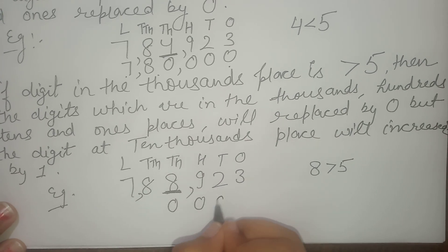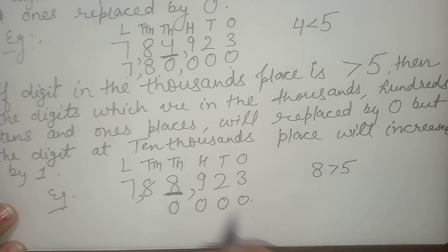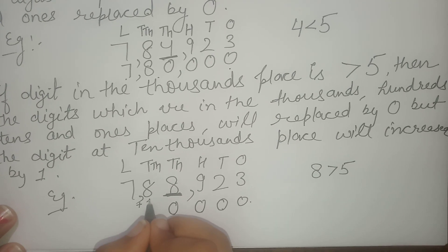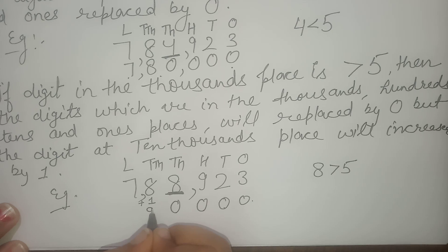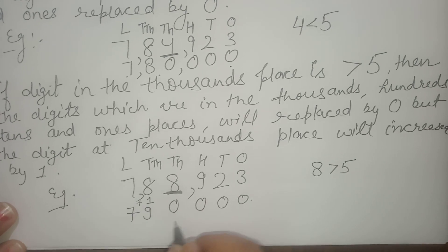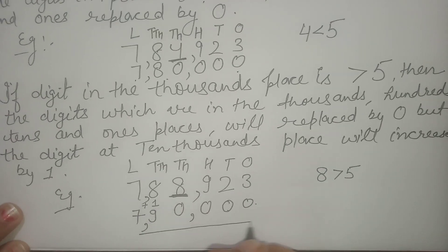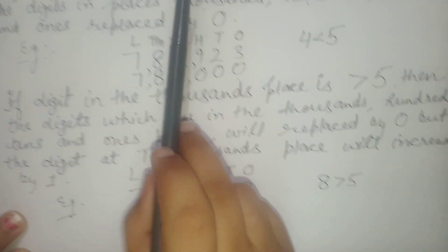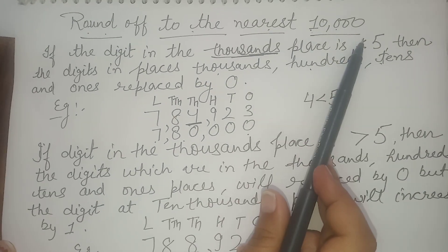Thousands, hundreds, tens and ones place will be replaced by 0, and the digit at 10,000 place will be increased by 1, and the answer is 7,90,000. This is round off to the nearest 10,000.